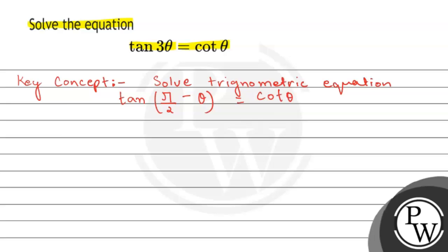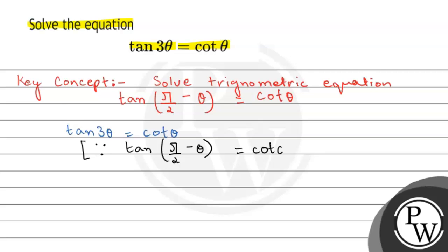So let's do it. The equation we have is tan 3θ is equal to cot θ. As we know the trigonometric identity: tan(π/2 − θ) is equal to cot θ. So we can write tan(π/2 − θ) in place of cot θ in the equation. So tan 3θ is equal to tan(π/2 − θ).